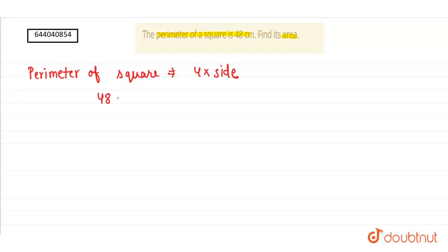square is 48 centimeter, which is equals to four times multiplied by its side. So the value of side will be 48 centimeter divided by 4. That is, the value of side is 12 centimeter. Now we have the side of